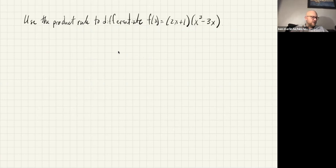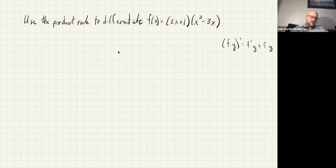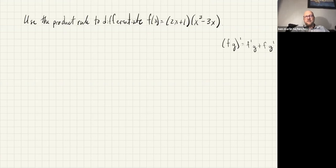Now we're going to do some stuff with the product rule. The shorthand is: if you've got two functions f and g multiplied together and you take the derivative, you take the derivative of the first and leave the second alone, then plus you leave the first alone and take the derivative of the second. If you're thinking we could just multiply this out into a polynomial — yes, you can, but there are problems that aren't polynomials, and we're just doing an easy example to start.